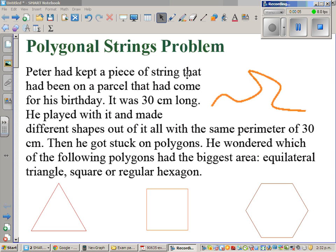Polygonal strings problem. Let's look at this problem. Peter had kept a piece of string that had been on a parcel that had come for his birthday. It was 30 centimeters long. He played with it and made different shapes out of it with the same perimeter of 30 centimeters. Then he got stuck on polygons. He wondered which of the following polygons had the biggest area: equilateral triangle, square, or regular hexagon.